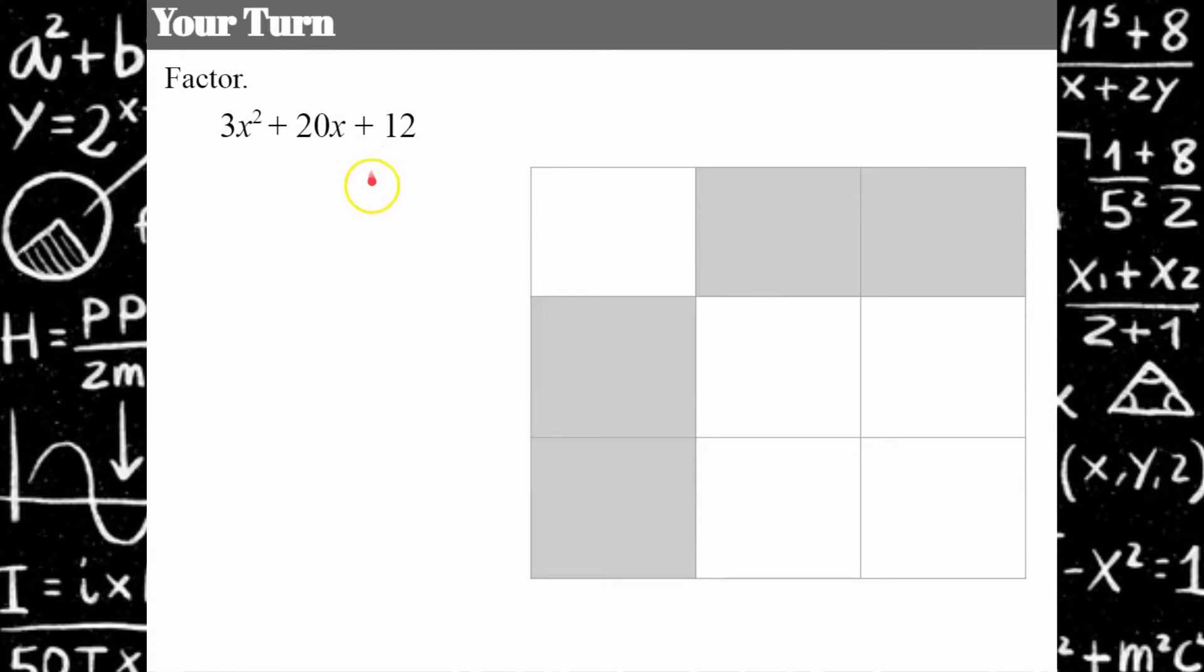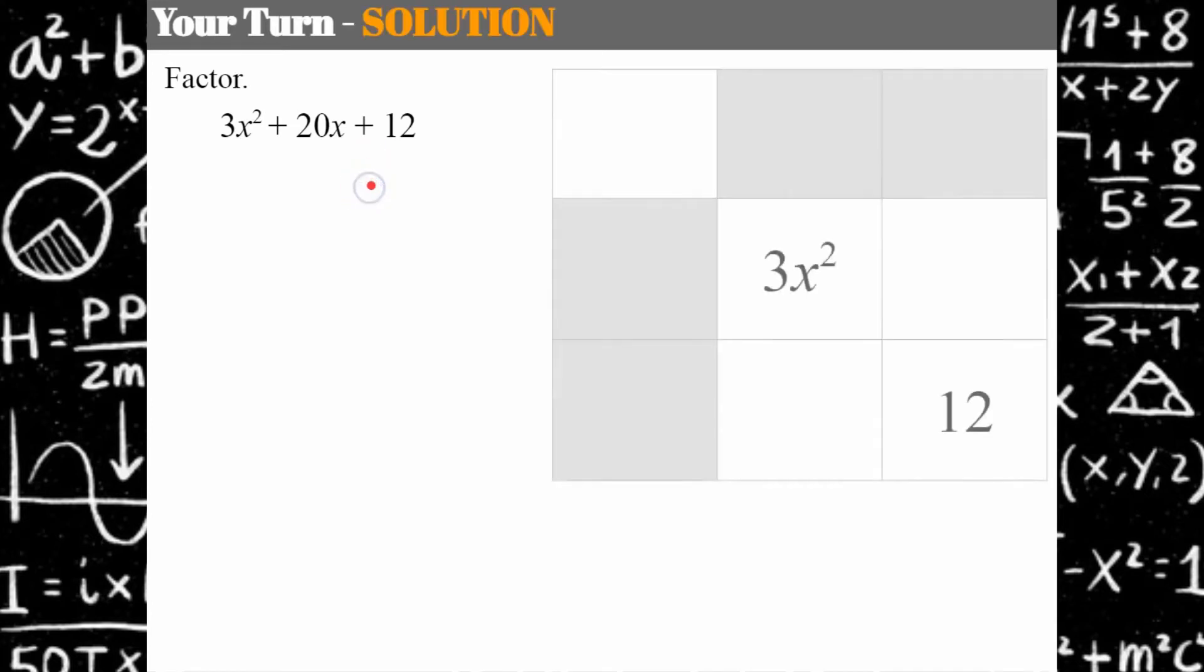Welcome back. Let's see how you did. I'm going to start off by putting the 3x² and the 12. We know that the first cell in the upper right is going to be 3x² and my constant 12 is going to be in the bottom right.